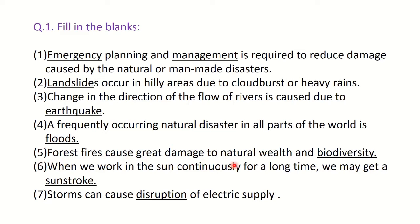Fifth: forest fires cause great damage to natural wealth and biodiversity — biodiversity means variety in animals and plants; because of fire they are destroyed. Sixth: when we work in the sun continuously for a long time, we get sunstroke. Seventh: storms can cause disruption of electric supply — the electric supply can be cut off because of storms.